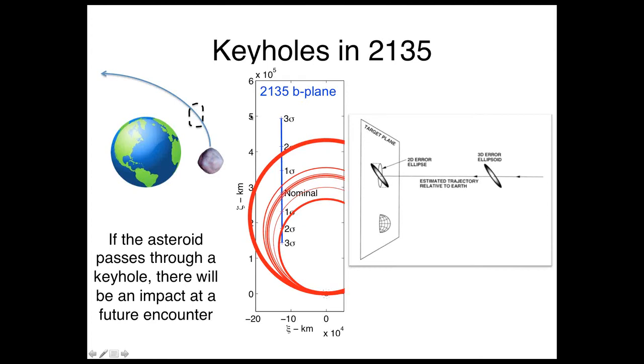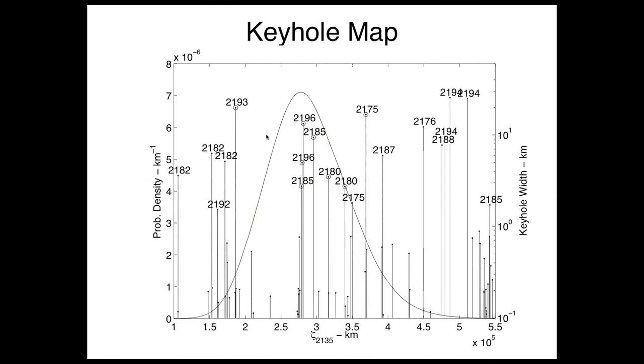If we take that zeta and map these keyholes and that uncertainty, this is a more complete depiction. We have zeta here and the keyholes which are marked by these tall lines. This marks the location and the width of the keyhole on the left. You have a keyhole here at 2185, and there's the width.